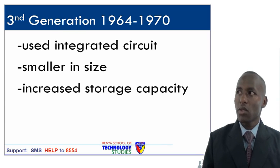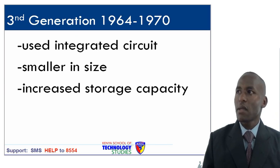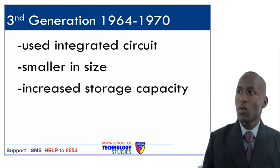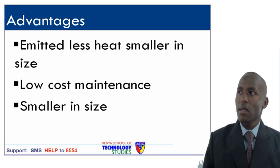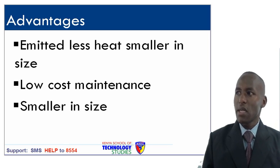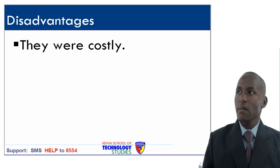The third generation was from 1964 to 1970. It used integrated circuits, was smaller in size and had increased storage capacity. Advantages: it emitted less heat, was smaller in size and had low-cost maintenance. Disadvantages: they were costly compared to the previous two generations.